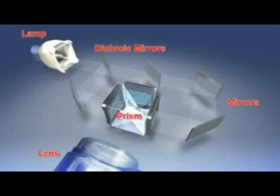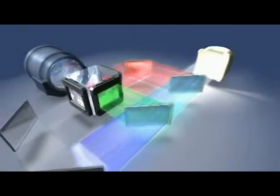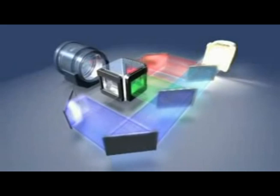Aside from the LCD chips, other key components of the 3-LCD system are the lamp, the dichroic mirrors, the mirrors, the prism, and the projection lens. White light produced by the projector's lamp is broken by the dichroic mirrors into the 3 primary colors of light: